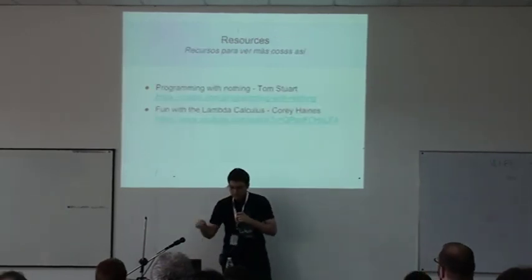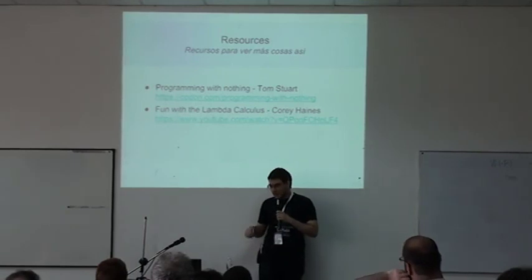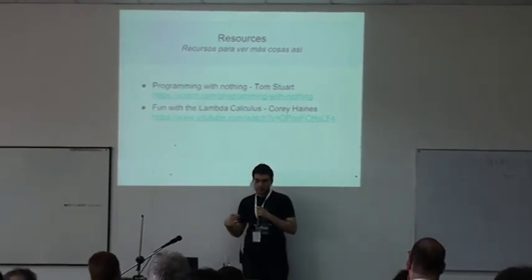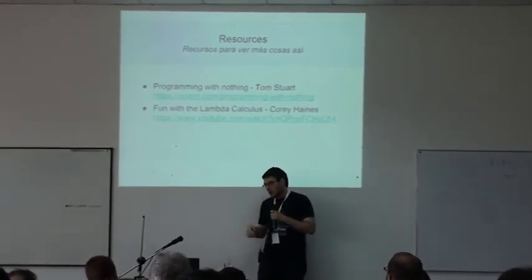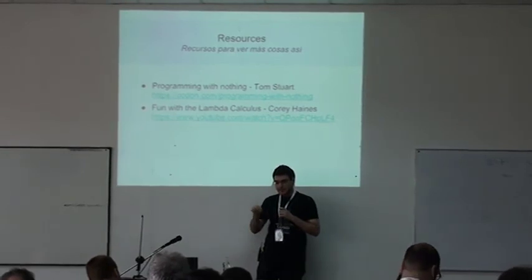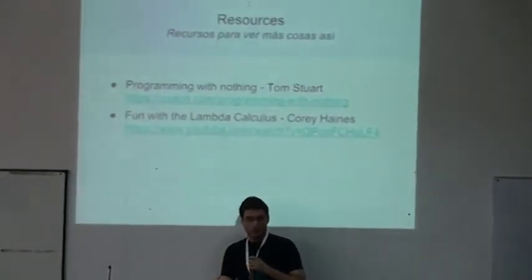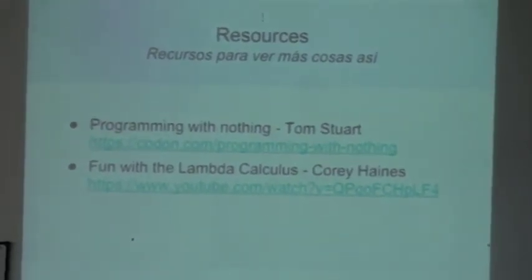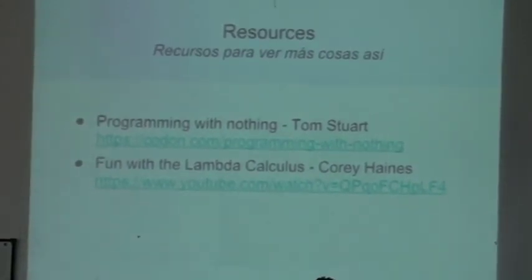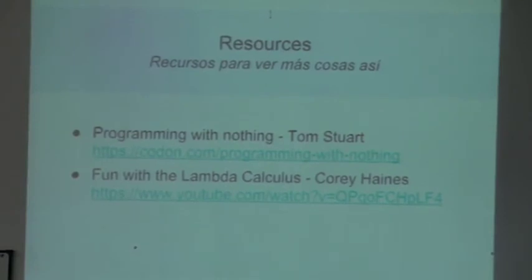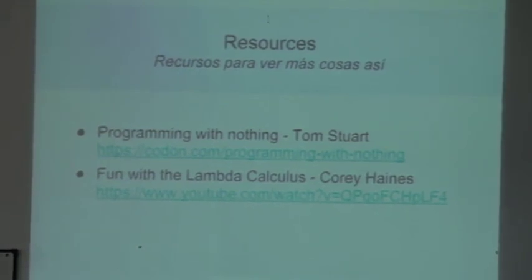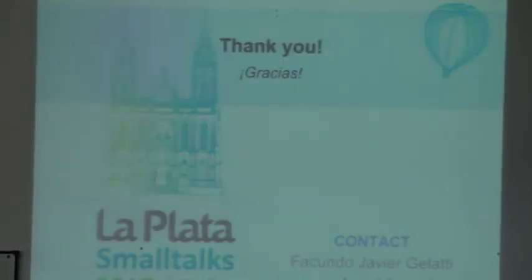Some resources to see more things like this: there are two talks that are very interesting, though sadly they use Ruby rather than Smalltalk. One is 'Programming with Nothing' by Tom Stuart, where he implements the FizzBuzz algorithm using only one-argument blocks. The other is 'Fun with Lambda Calculus' by Corey Haines, where he implements the Peano numbers using only one-argument blocks. Thank you — I hope you enjoyed the talk.